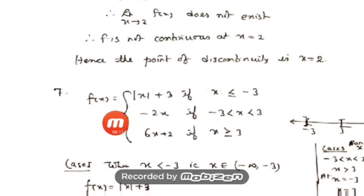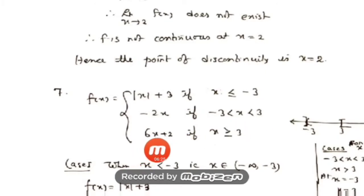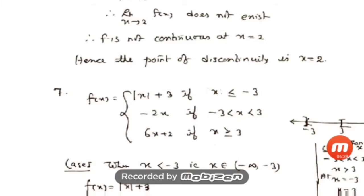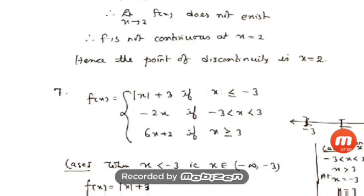Now let us go to Question 7. The function is defined in three ways: f(x) = |x + 3| if x ≤ −3; f(x) = −2x if −3 < x < 3; and f(x) = 6x + 2 if x ≥ 3. The critical points are −3 and 3. Substituting them on the number line gives five parts: x < −3, x = −3, −3 < x < 3, x = 3, and x > 3.